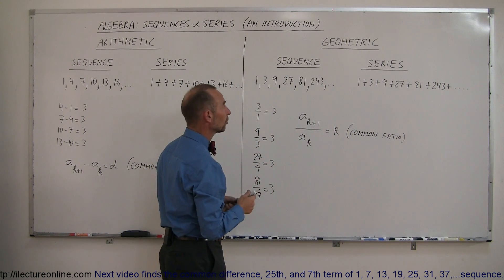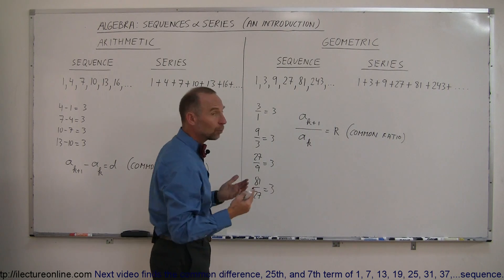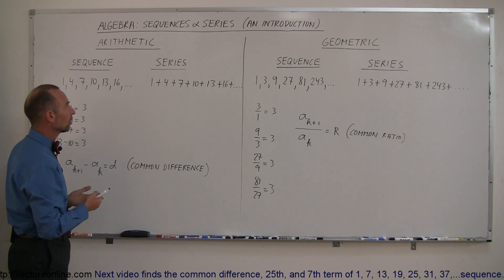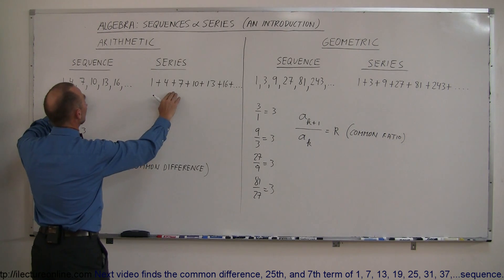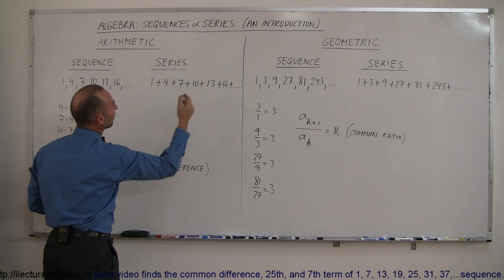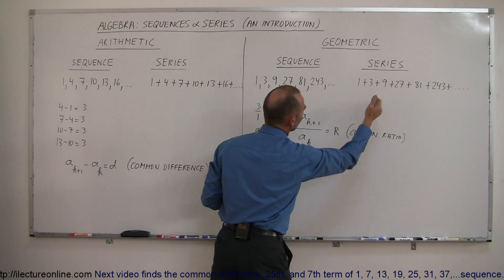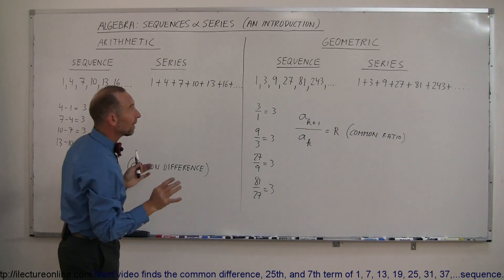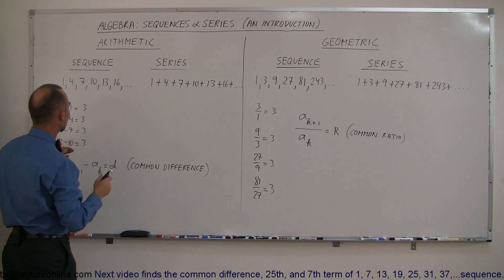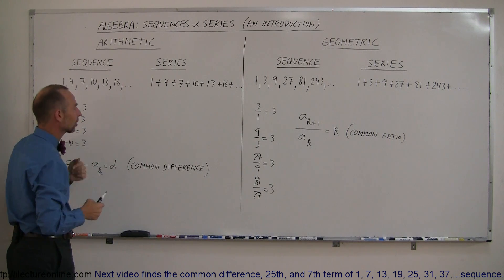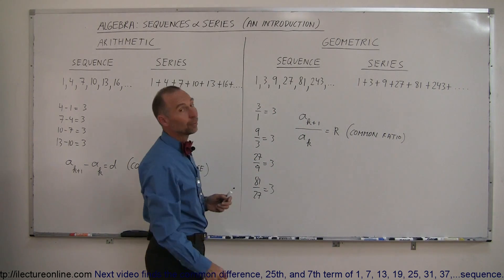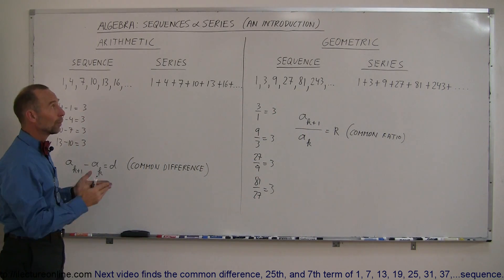To summarize: the only difference between a sequence and a series is that a sequence lists the numbers while a series adds them. The difference between the two types is that arithmetic means subtracting any element from the previous one always gives the same common difference, while dividing any element by the previous one always gives the same common ratio. Now we're ready to show you some examples.